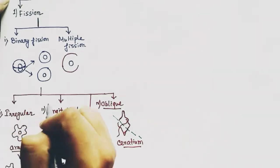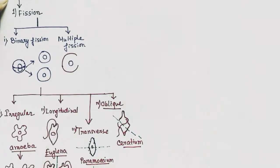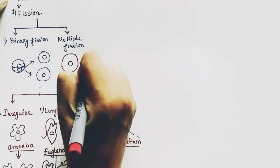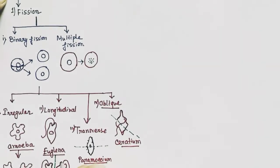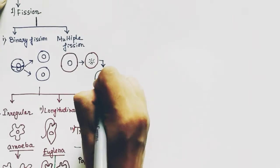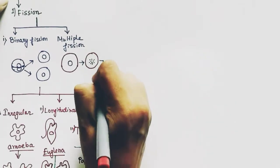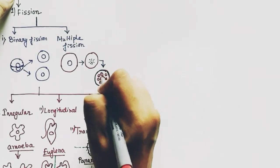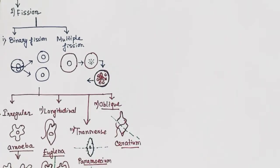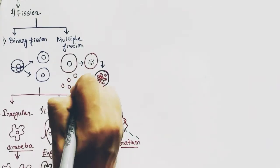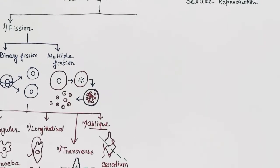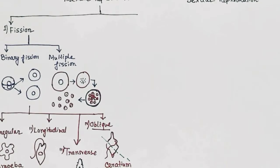The second type of fission is multiple fission. In this case, when the parent organism divides through asexual reproduction, it produces more than two individuals. The nucleus of the parent unicellular organism divides into many parts, and each part of the nucleus contains the cytoplasm and becomes a new organism. An example of this is found in Plasmodium.